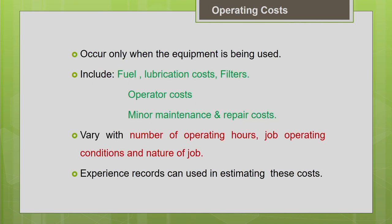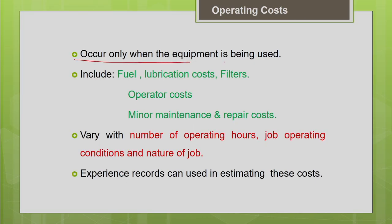What are operating costs? Basically, operating costs occur only when the equipment is used. Unlike ownership cost — which is incurred irrespective of whether the equipment is operated or not, even when the equipment is idle — the operating cost occurs only when the equipment is used. This is a highly variable cost; it depends upon the usage of the equipment. Ownership cost is a relatively fixed annual cost, but operating cost is highly variable.